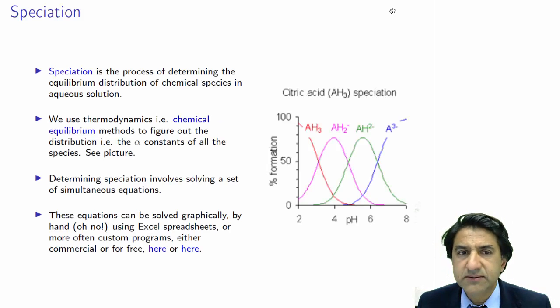Speciation is the process of determining the equilibrium distribution of chemical species in aqueous solution, i.e., what are the species in the solution and how much of them are there.